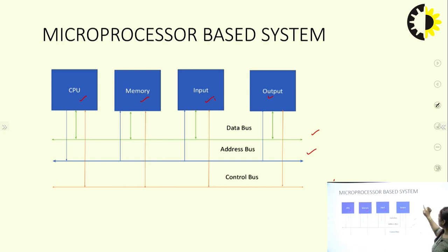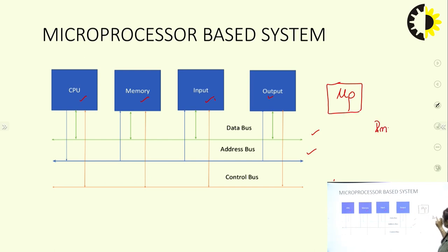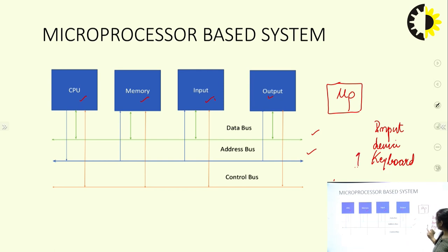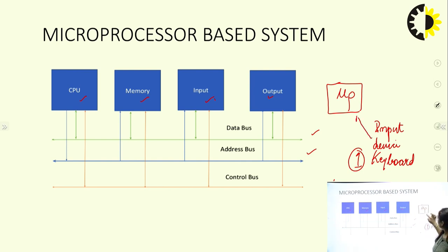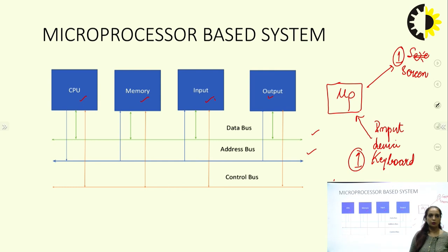For example, suppose we have one microprocessor and one input device like a keyboard attached to it. When you press the key '1' on the keyboard, it will be processed by the microprocessor, and the microprocessor will display that '1' on the screen. This is how the microprocessor works.